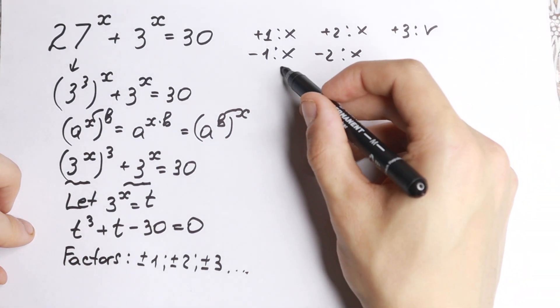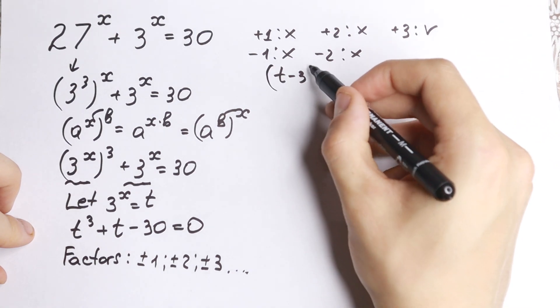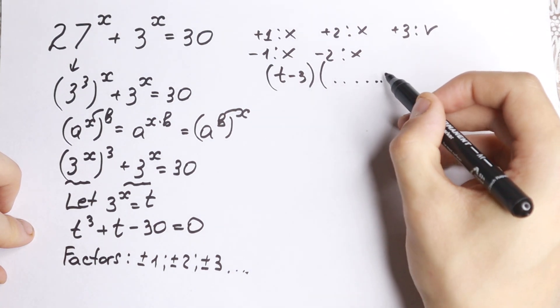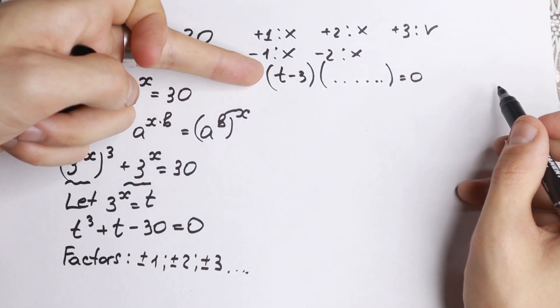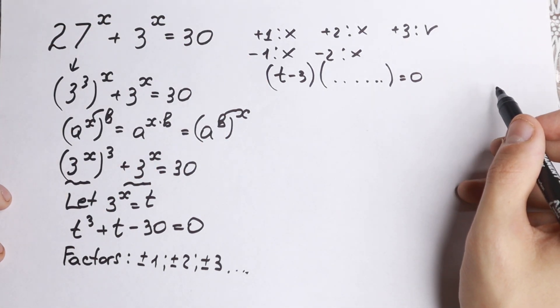And we need to find another parentheses. Right now I'm going to show you how we can do this. So finally we find one factor, t equal to 3. So let's go next.